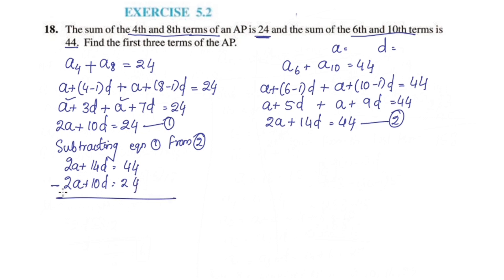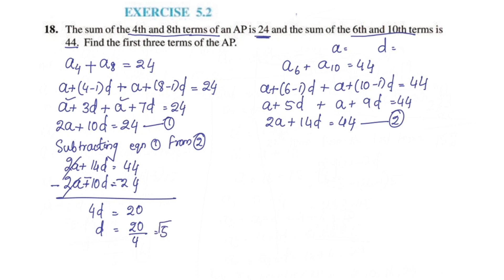Subtracting equation 1 from equation 2: 4d is equal to 20. Therefore d is equal to 20 divided by 4, which is equal to 5.